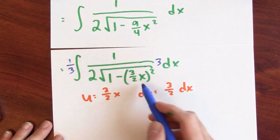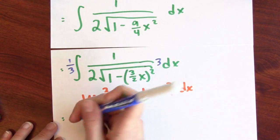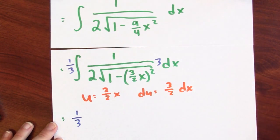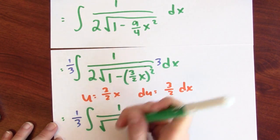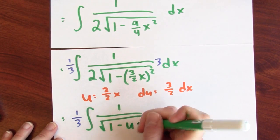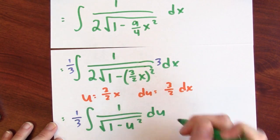1 over the square root of 1 minus u squared. Let's write that down. So this whole thing is 1 third. The anti-derivative of 1 over the square root of 1 minus, this is u squared. And 3 halves dx is du.